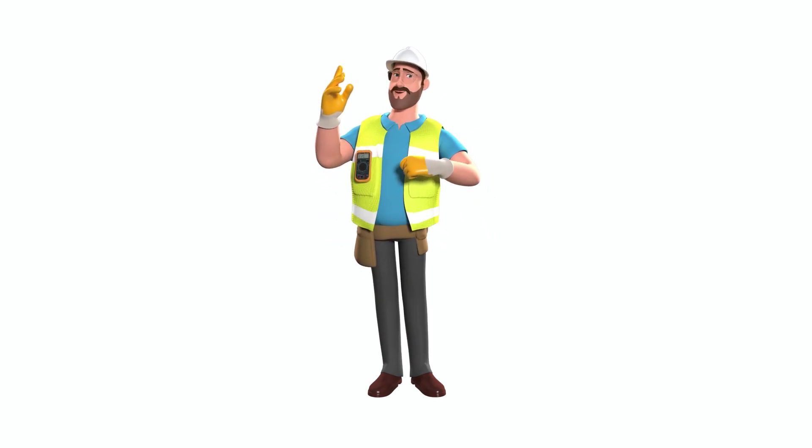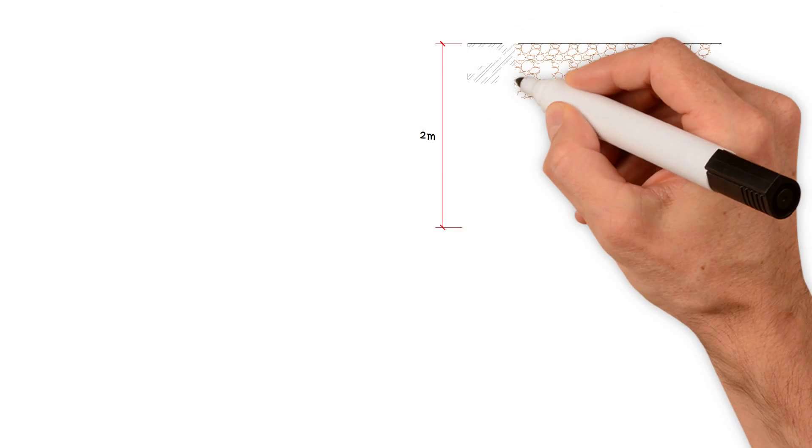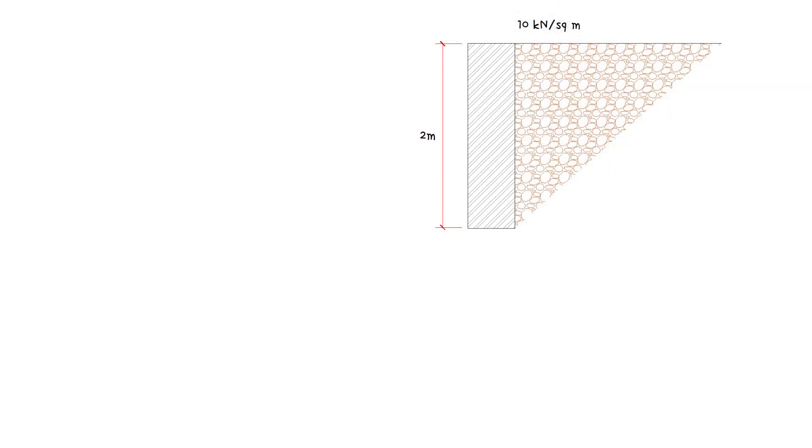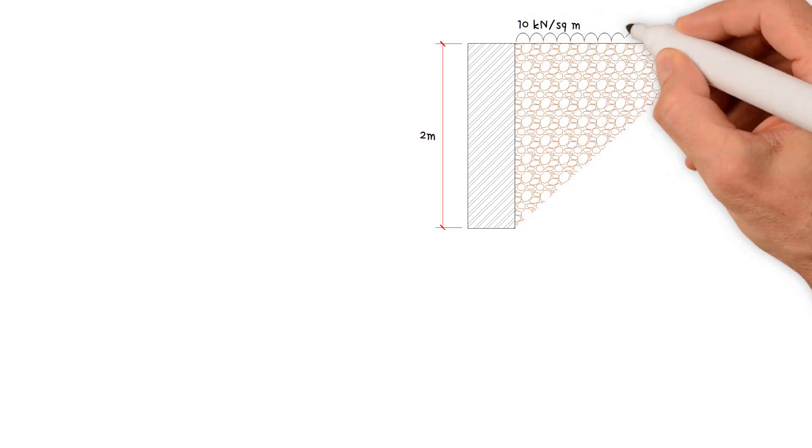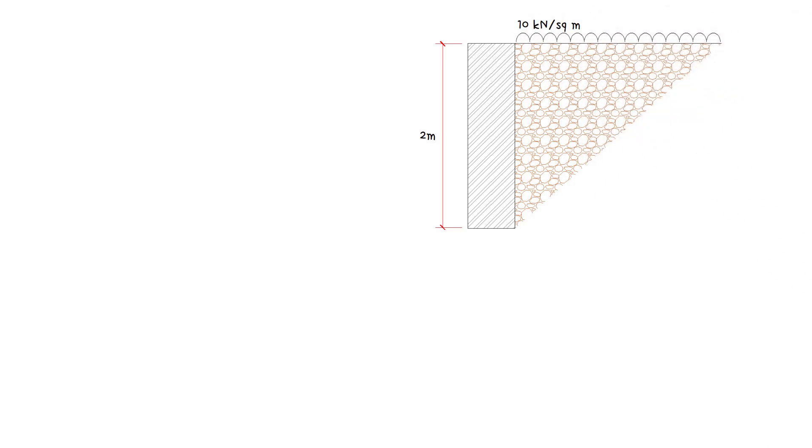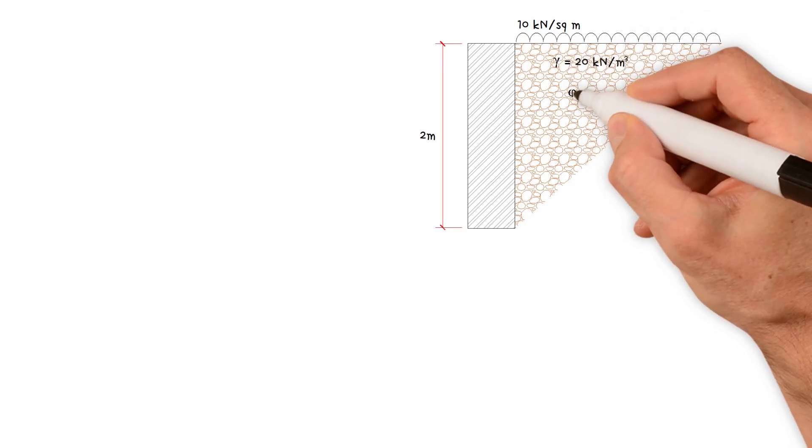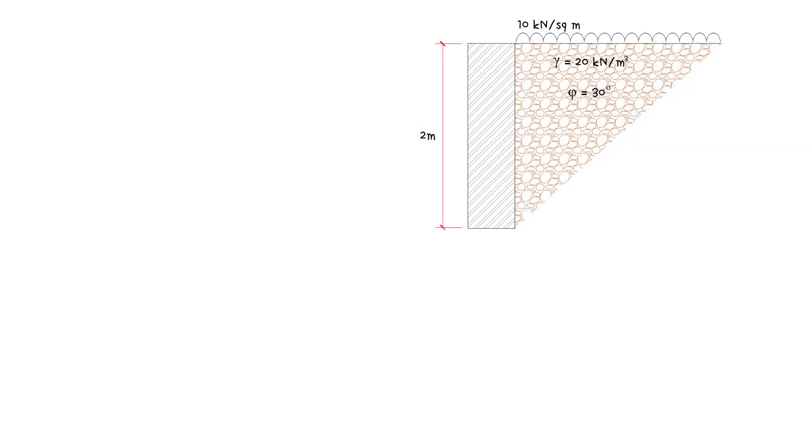Let's start with an example. A 2 meter tall masonry retaining wall with a 10 kN per m² surcharge applied to the upper level behind the wall. The soil is a silt-sand material with a density of 20 kN per m³ and an angle of friction of 30 degrees. The water table is 4.5 meters below the top of the retained surface.